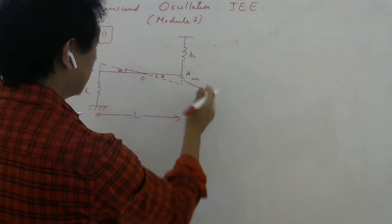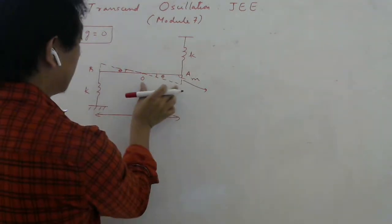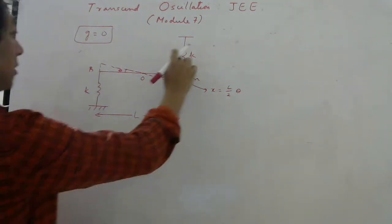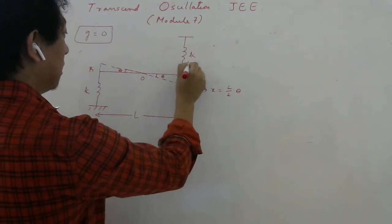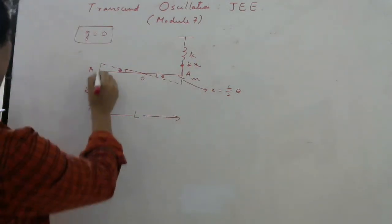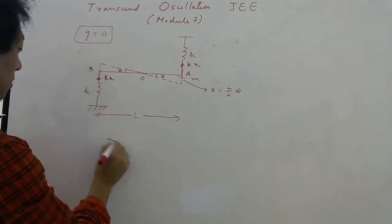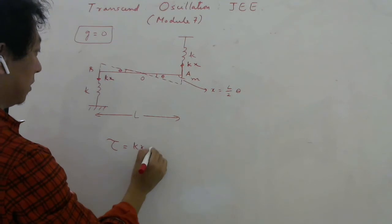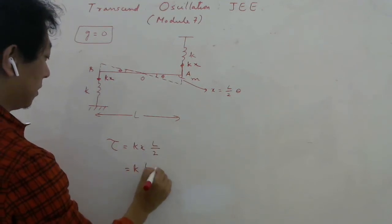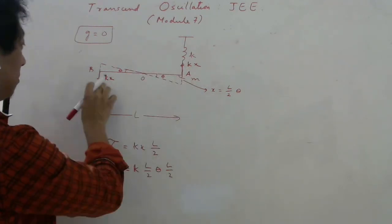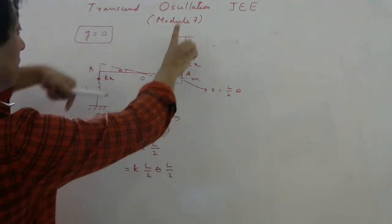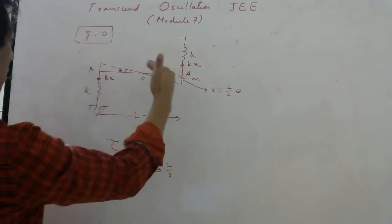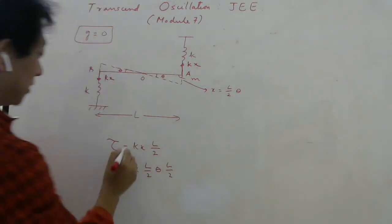Once end A is displaced down by x = (L/2)θ, that spring is compressed by x, giving a restoring spring force k·x upward on the rod. End B goes up by the same amount x, so that spring is also stretched by x, giving a spring force k·x downward on end B. The torque from each spring force about the center is k·x · (L/2). Both torques act in the same direction (verified by R × F for each end), so they add.